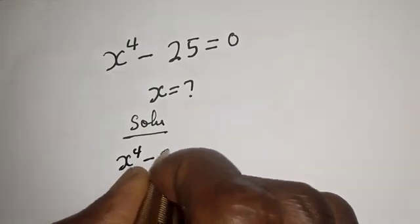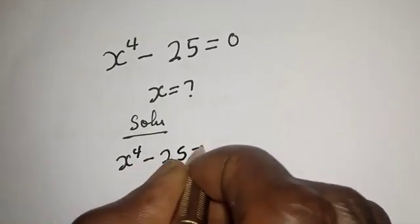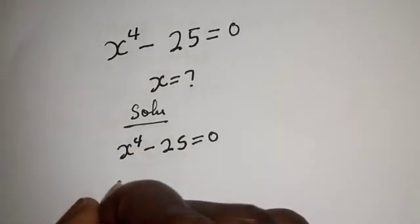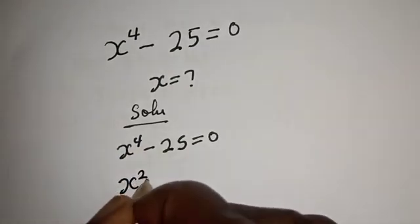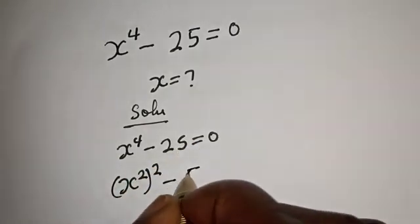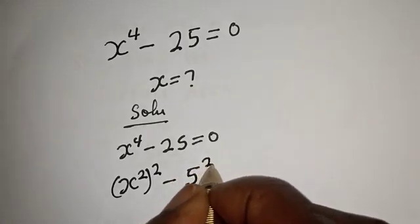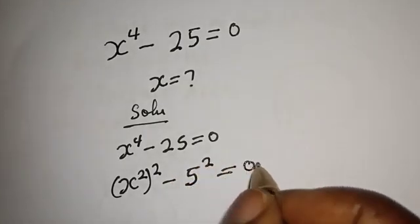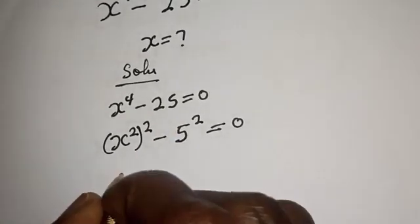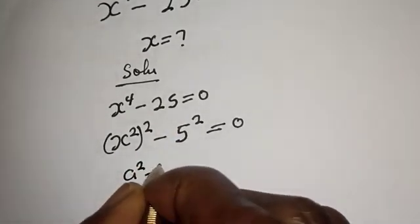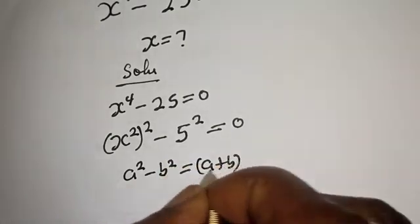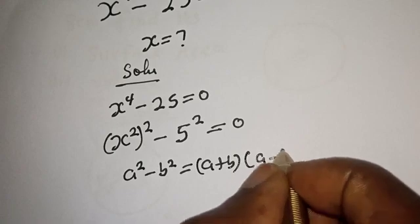s to the power 4 minus 25 is equal to zero. s to the power 4 can be written as s squared, squared. And 25 can be written as 5 squared, equal to zero. This is a perfect square difference, that is a squared minus b squared is equal to a plus b multiplied by a minus b.